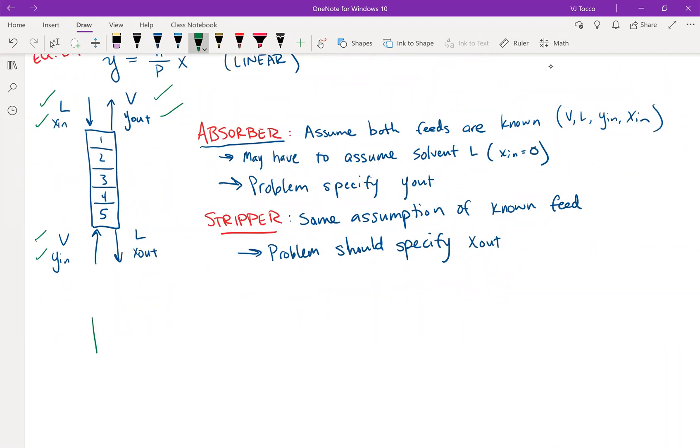So let's draw only the top of the column now. We'll call this stream V from stage n plus one. So this will be stage n at the bottom, stage one dot dot dot. This would be L of stage n, x of stage n, y of stage n plus one. And we also have L, x_in, and V, y_out. We have to keep track of the subscripts for the flow rates.